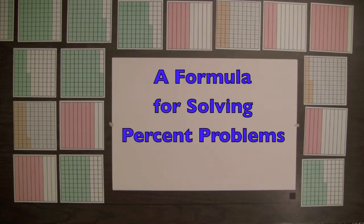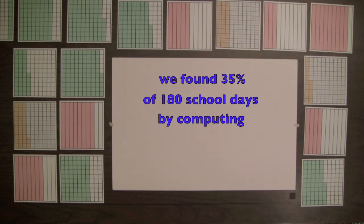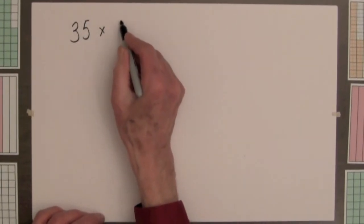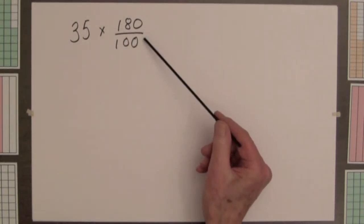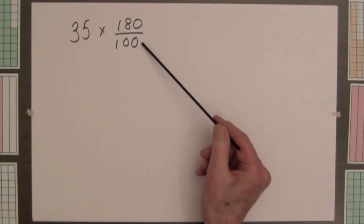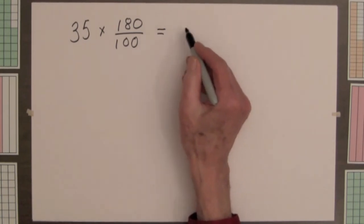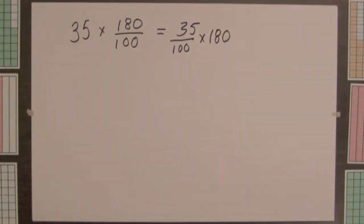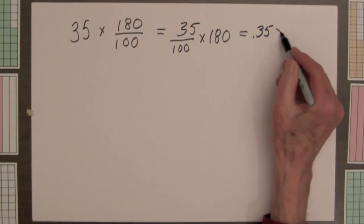Let's look at a formula for solving percent problems. In the first of the three problems, we found 35% of 180 school days by computing 35 times 180 divided by 100. The quotient 180 divided by 100 gives the value of one small square, and then we multiply by 35 for the 35 small squares. This product can be written as 35 divided by 100 times 180, or equivalently, 35 hundredths times 180.